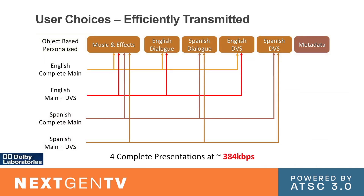One of the most important things about this audio system is the efficiency — the fact that you can have all these things in separate channels and basically allow them to be mixed and selected at the receiver, instead of making all those choices at the broadcaster as a one-size-fits-all. In this example, we have four complete presentations which can be in full 5.1, stereo, or 7.1 plus 4. You have one music and effects channel, an English dialogue, a Spanish dialogue, English video descriptive services, and Spanish descriptive services, plus metadata. At the receiver, the person chooses which dialogue track they want — music and effects is the same for everybody — giving you four complete tracks in the same capacity used today for essentially one 5.1 setup.